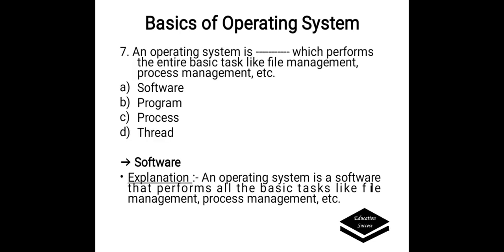An operating system is ___ which performs the entire basic tasks like file management, process management. Options are A. Software, B. Programme, C. Process, D. Trade. Correct answer is A, Software. An operating system is a software that performs all basic tasks like file management and process management.